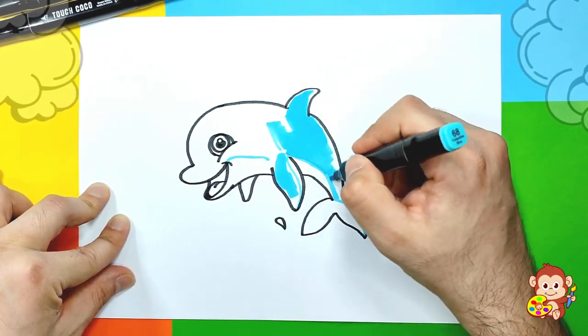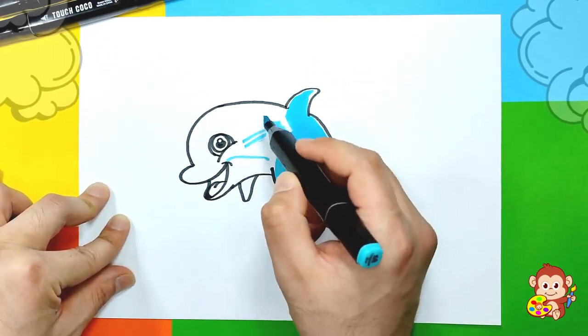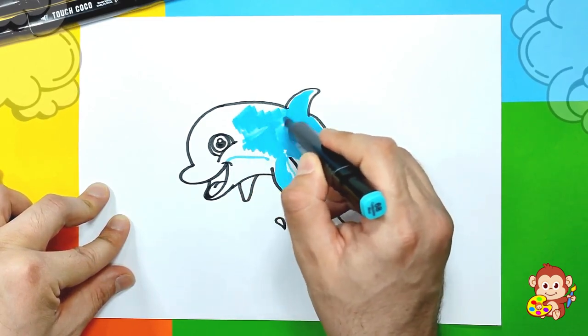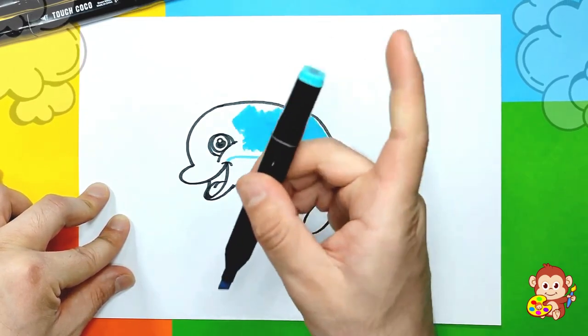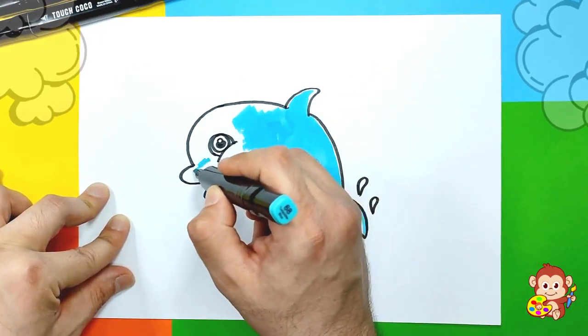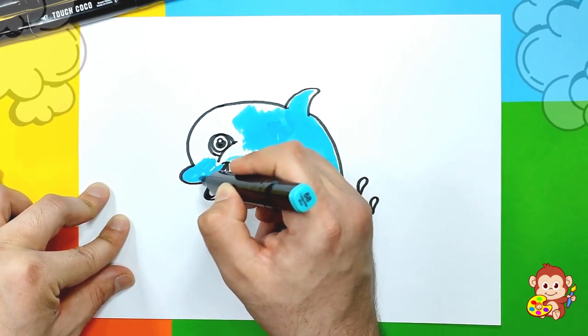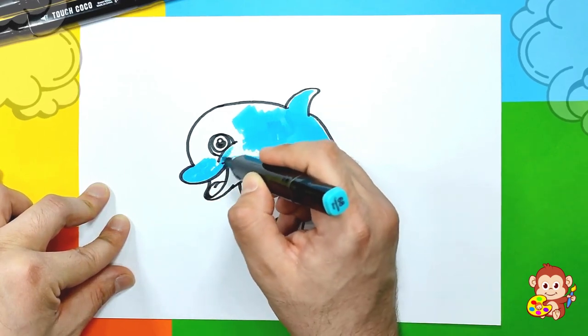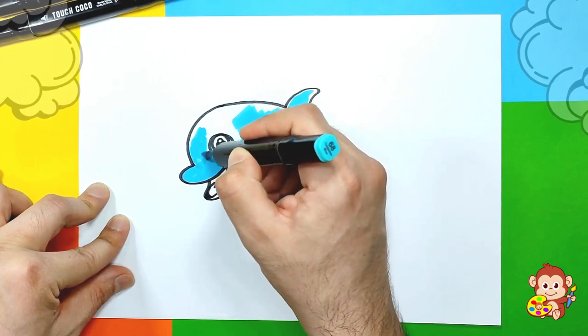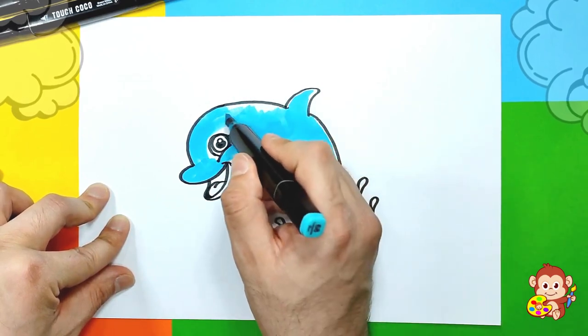If you're using a similar marker as me, you can use this thicker side to color most of his body, and then use the other side, this one, for these little details we need to color. Let's go and color the whole top part of his body.